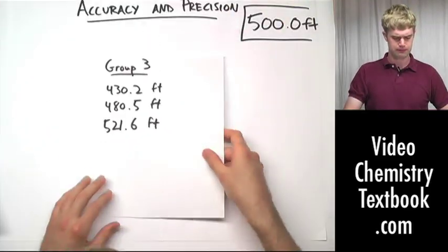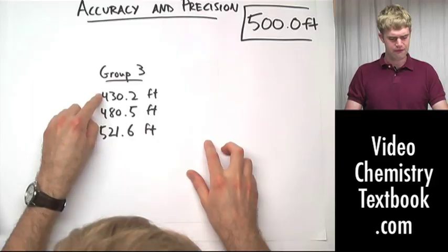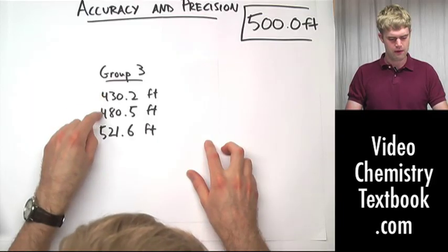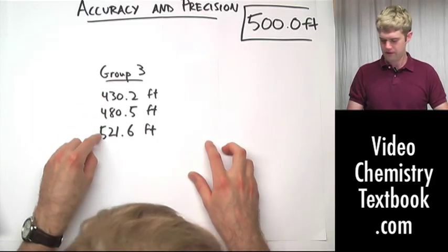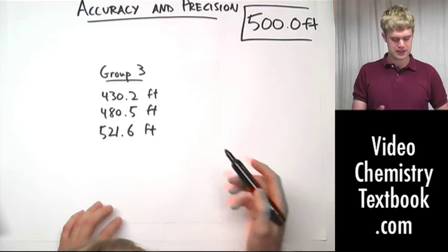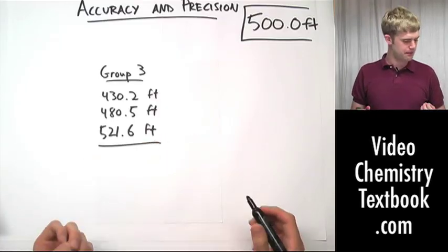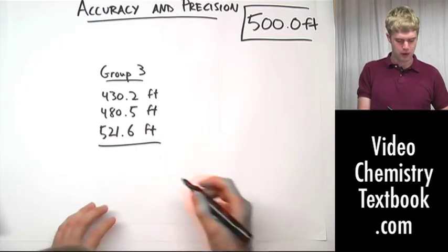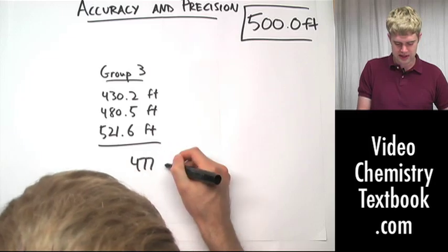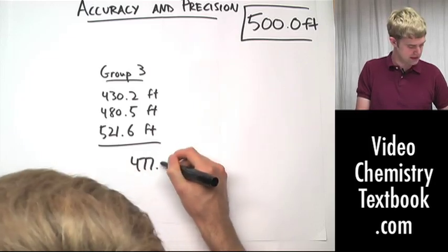And here's group three: 530.2, 480.5, and 521.6 feet. Add these up and divide by three, and what we're going to get is 477.0 feet.